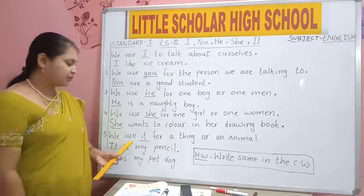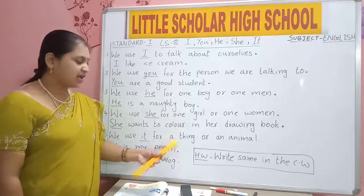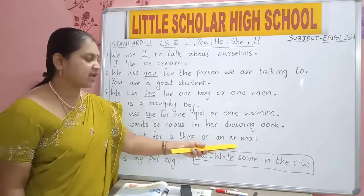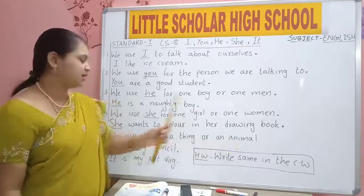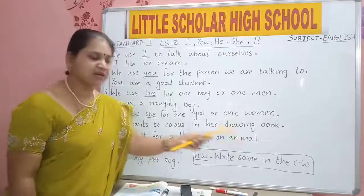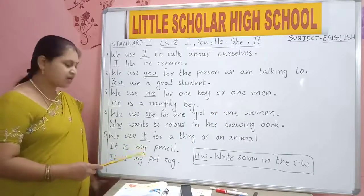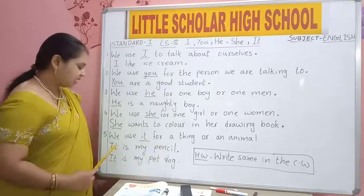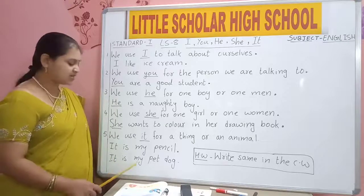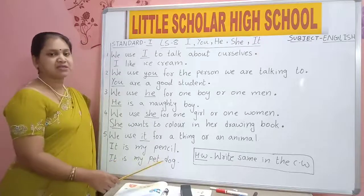We use IT for a thing or an animal. It is my pencil. It is my pet dog. Understood, children?